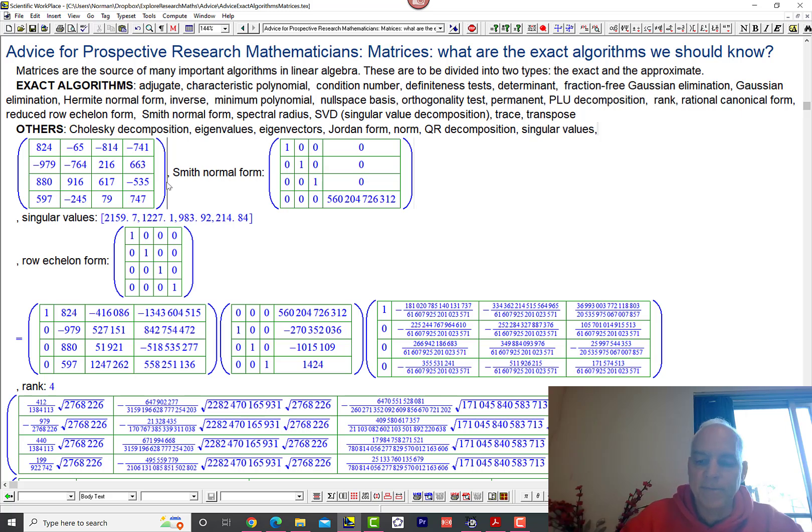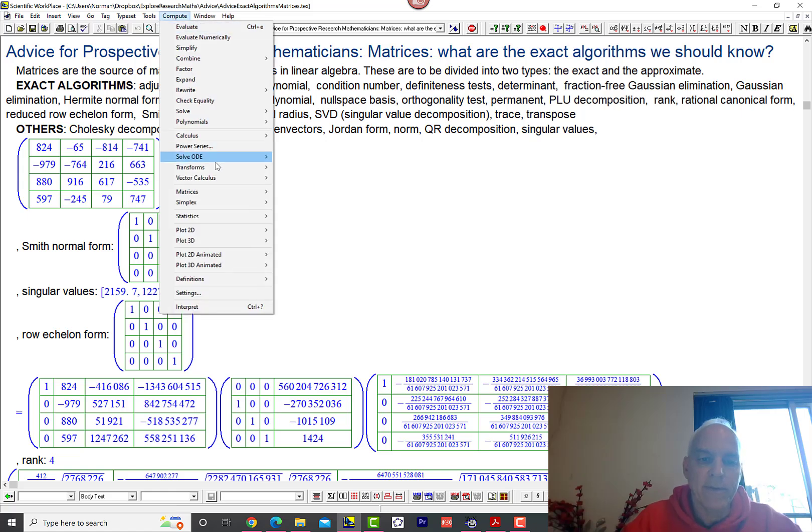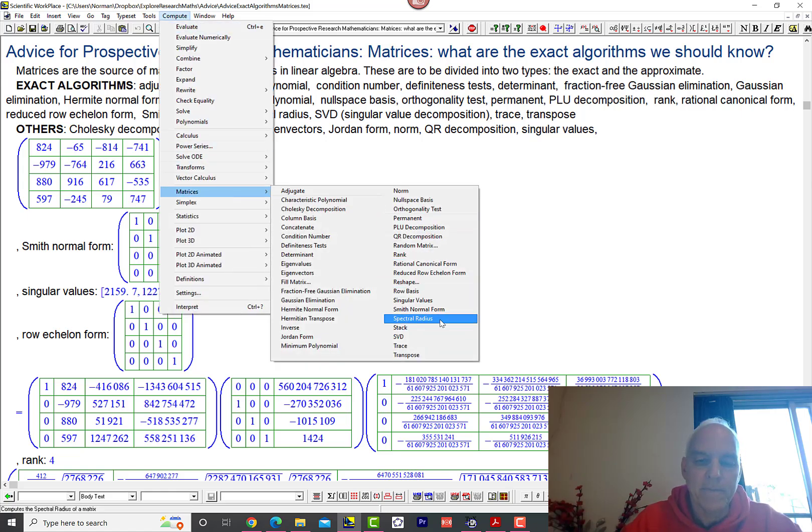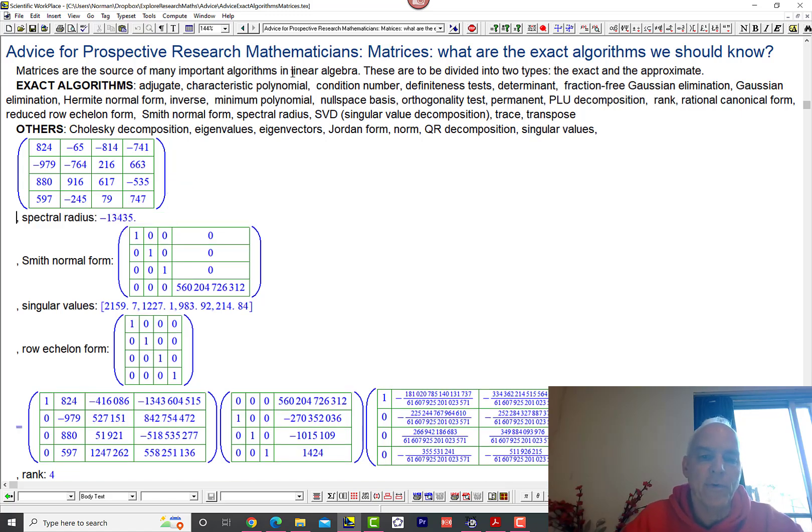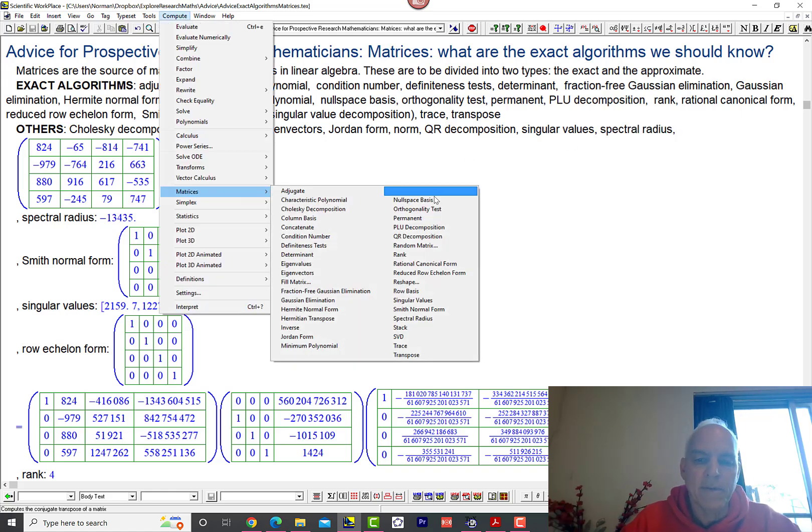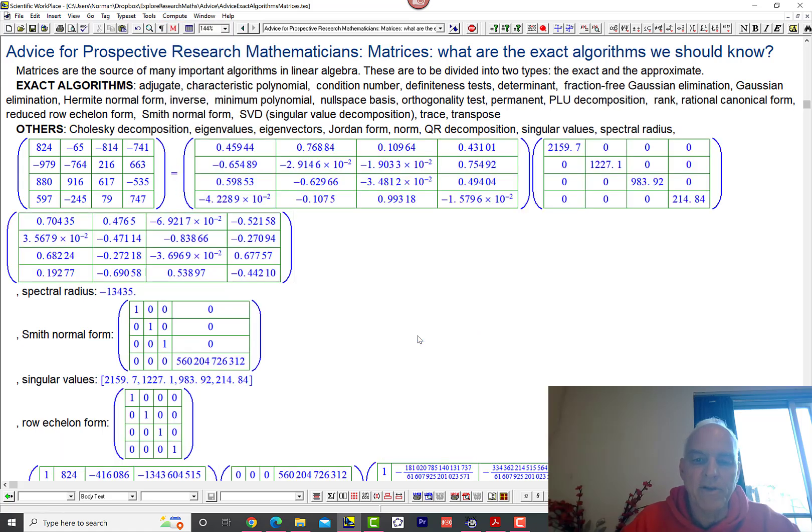Smith normal form—we can see that's exact. And now spectral radius. Again that's a decimal there. Also has something to do with eigenvalues, so that's also approximate, and we'll take it and put it in the approximate category.